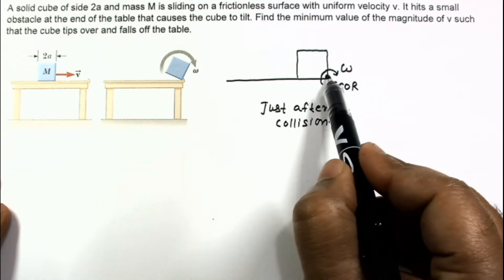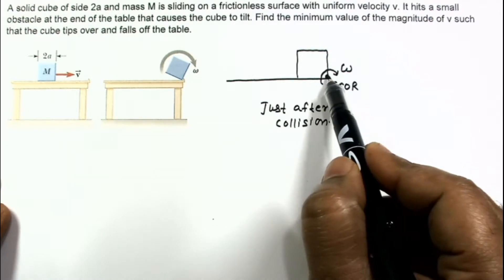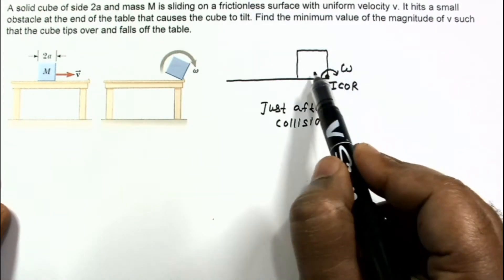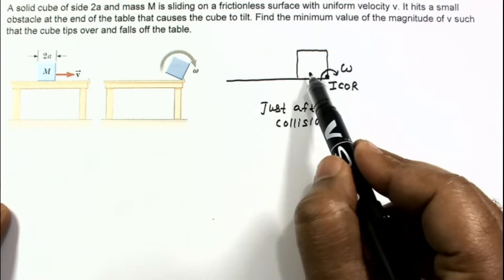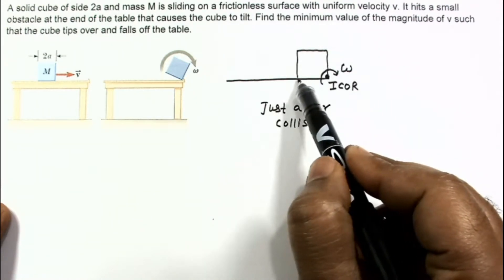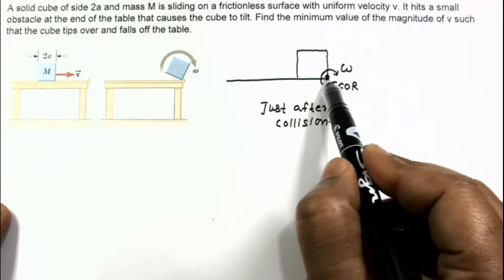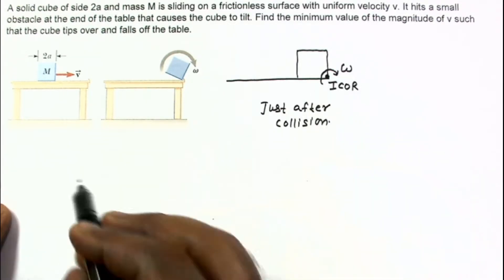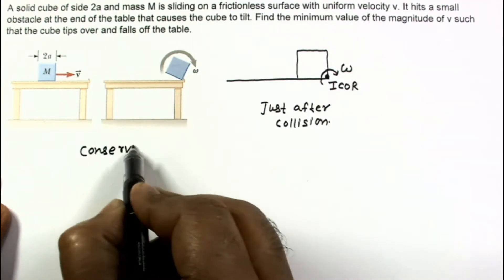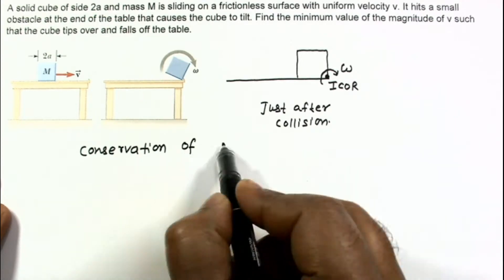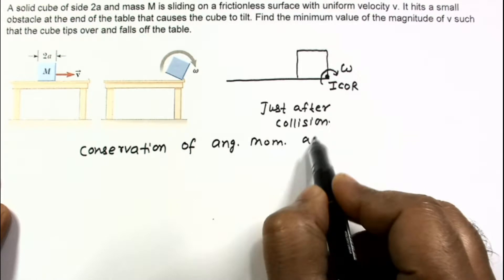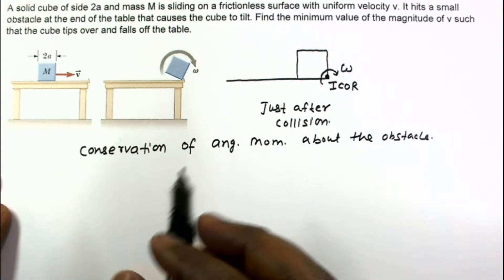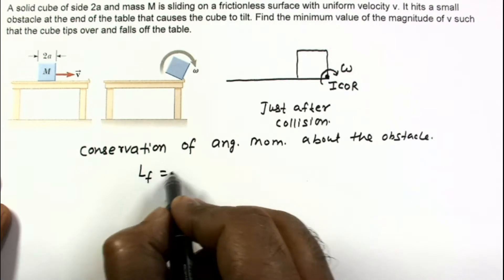We can find omega by conserving angular momentum about the obstacle. Since any impulse will pass through this point during the collision and there is no other impulsive force on the cube — mg and the normal from the ground are not impulsive — any impactful force comes only from the obstacle. So we apply conservation of angular momentum about the obstacle: L_final = L_initial.